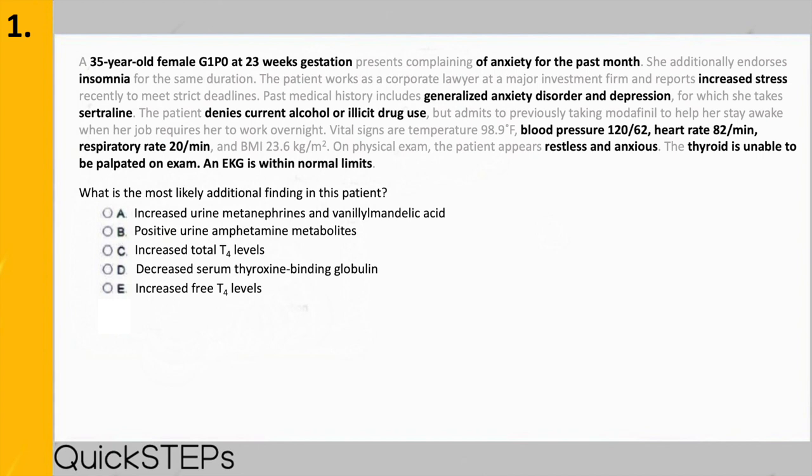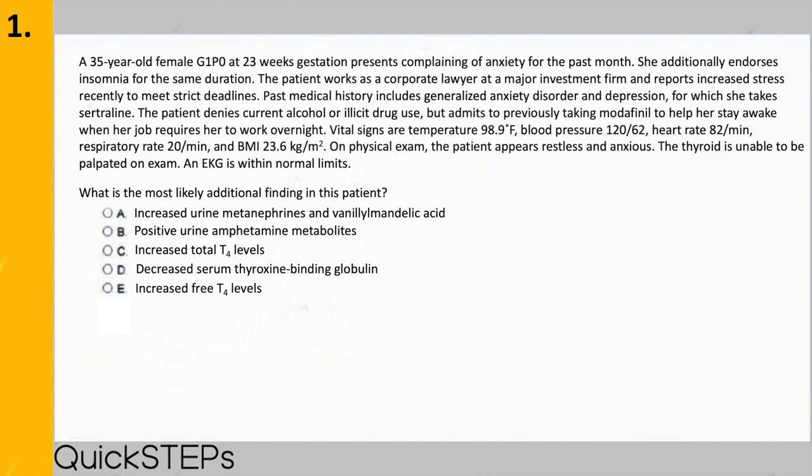To sum up the general clinical presentation: we have a pregnant woman with a history of generalized anxiety and depression who admits to increased stress due to her job and endorses insomnia and anxiety for the past month. Her vitals, physical exam, and EKG are all completely normal. Now I want you to pick an answer that best answers this question, and we'll go over each choice.